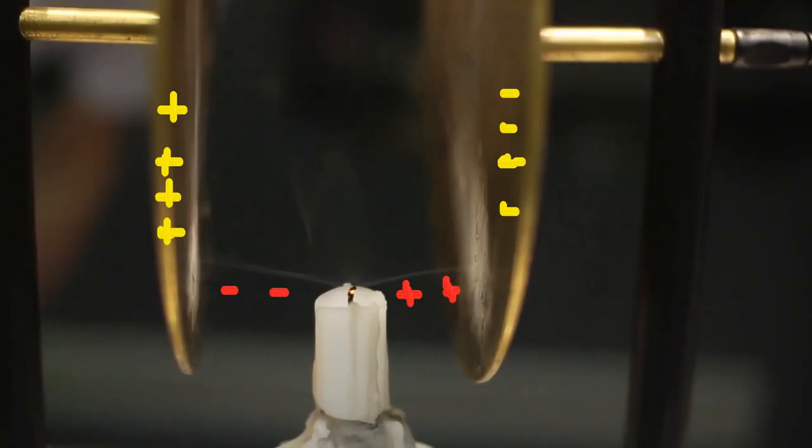A strong enough electric field extinguished the flame. Negative ions accelerate toward the positive metal disc and positive ions accelerate toward the negative metal disc.